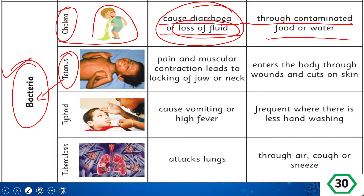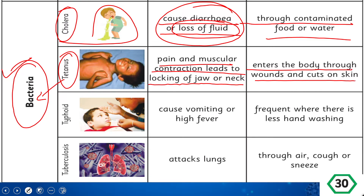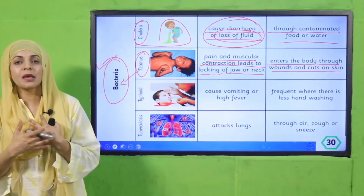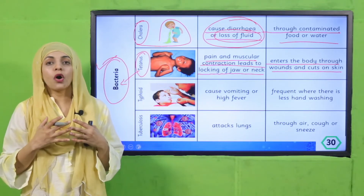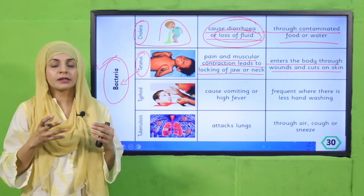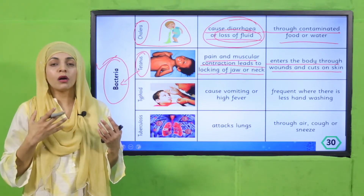Then comes tetanus, also caused by bacteria. It causes pain and muscular contraction, leading to locking of the jaw or neck — your jaw becomes fixed and your neck cannot move. Tetanus enters the body through wounds and cuts on the skin. Usually when you get an injury, the bacteria enter your body through there.